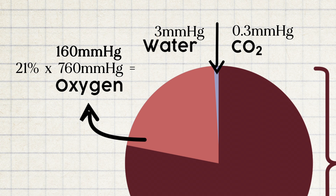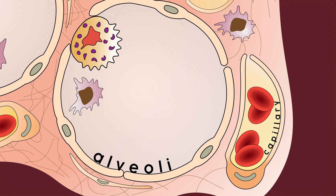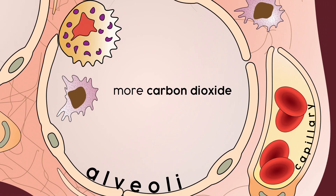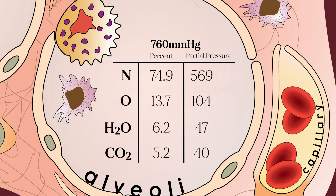Water vapor at 4 hundredths of a percent in atmosphere has a partial pressure of 3 mmHg. But partial pressure depends on the composition of the gases in the air sample you're talking about. The air in our alveoli, for instance, has way more water vapor in it than the air around us, so the partial pressure of water vapor is higher inside our lungs than outside. Each alveolus is going to have a mixture of gases with more carbon dioxide and more water vapor than the air around us — CO2 because it's a waste product we're breathing out, and water vapor because we want our airway to be humid. The alveoli have the same total pressure as outside air, so we'll assume 760 mmHg, but each gas has a different partial pressure compared to outside air.